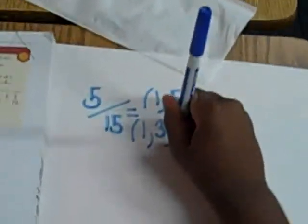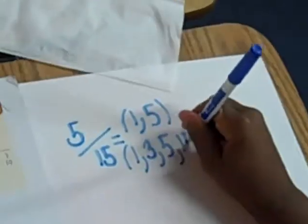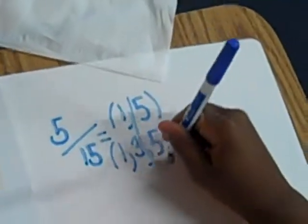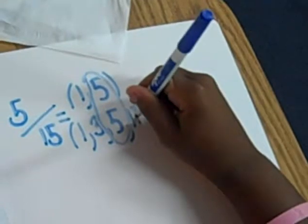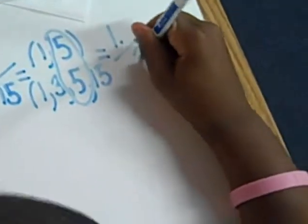They're only divisible by one and itself. So what's going to be the greatest common factor for five and fifteen? Five. Five. Okay and quickly someone tell me the reduced fraction. One third. Very good. One third.